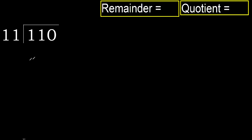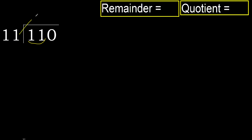110 divided by 11. 1 is less, therefore next. 11 is not less, therefore work with 11. 11 multiplied by which number is nearest to 11 but not greater?